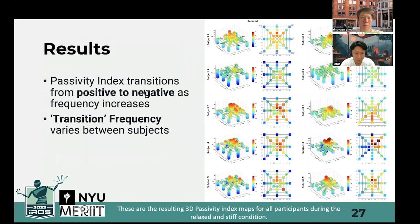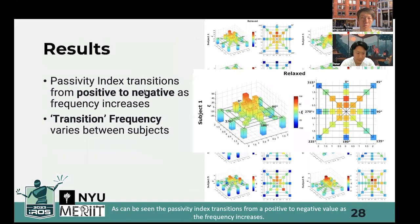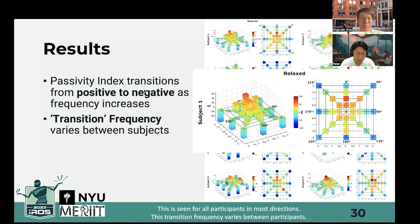These are the resulting 3D passivity index maps for all participants during the relaxed and stiff conditions. As can be seen, the passivity index transitions from a positive to a negative value as the frequency increases. The negative passivity index means that the behavior of the dynamics becomes non-passive, which can sacrifice the stability if left unaddressed. This is seen for all participants in most directions, and the transition frequency varies between participants.